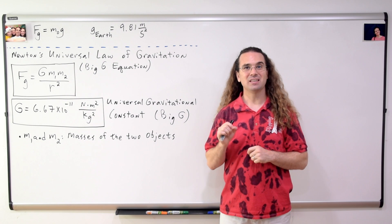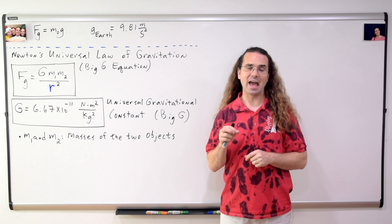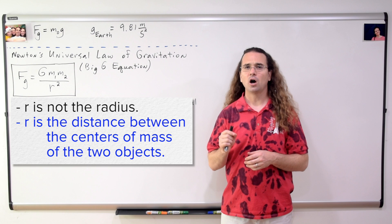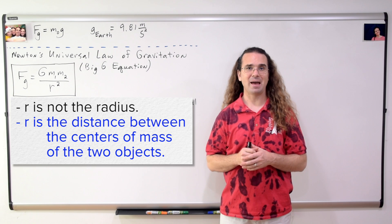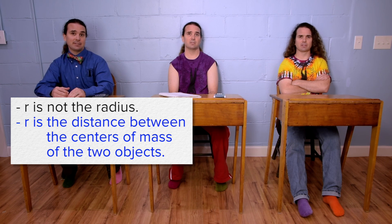And now let's talk about the r in this equation. Please, class, repeat after me. r is not the radius. r is not the radius. r is the distance between the centers of mass of the two objects. r is the distance between the centers of mass of the two objects.